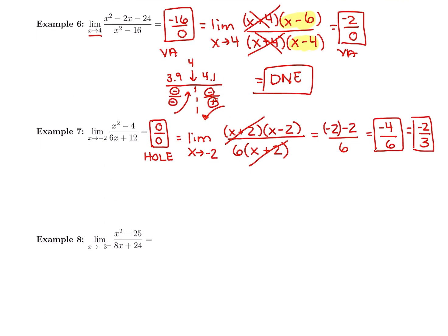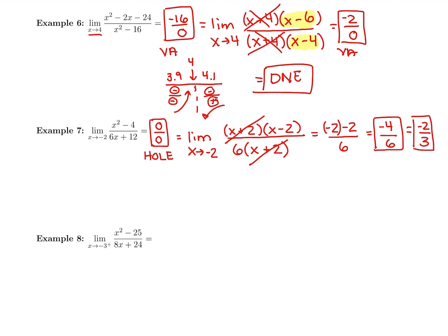Let's try those three steps one more time. Plug in negative 3: negative 3 squared is 9, minus 25 gives negative 16 in the top. In the bottom, 8 times negative 3 plus 24 is 0. We get a number divided by 0 — it's a vertical asymptote. I'll still factor and see if anything cancels — if it was supposed to be 0 over 0, factoring and canceling would give a final answer.